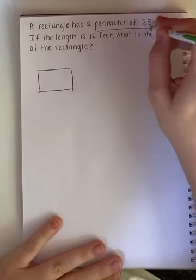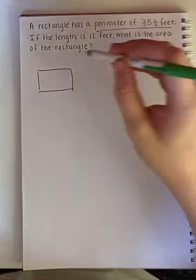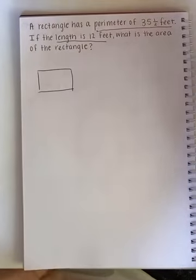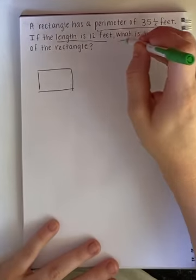Alright, so we know the perimeter is 35 and a half feet. We know that the length is 12 feet. We are trying to find out what is the area.